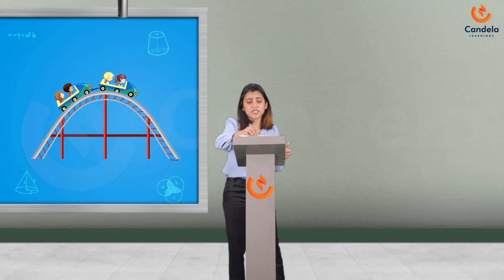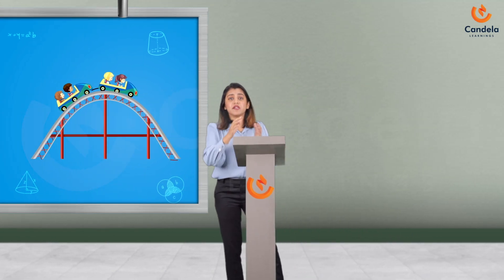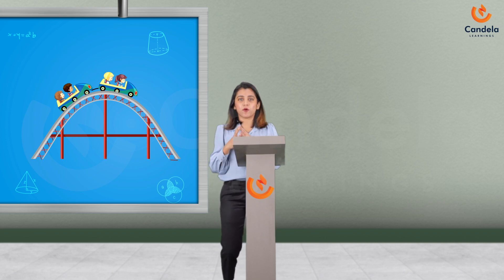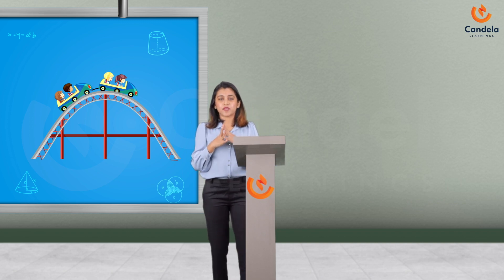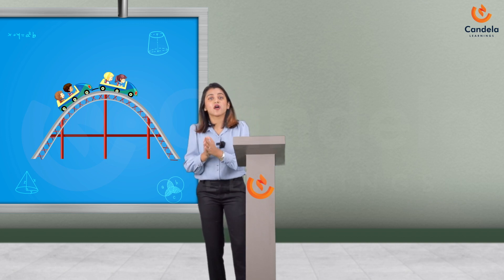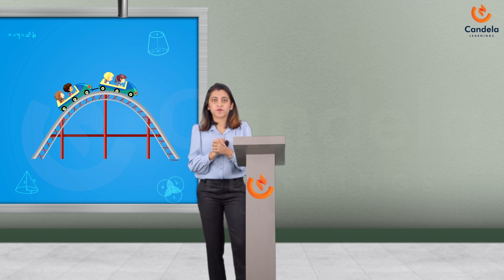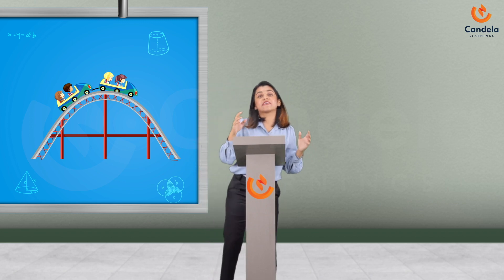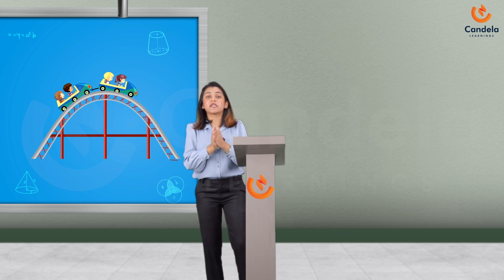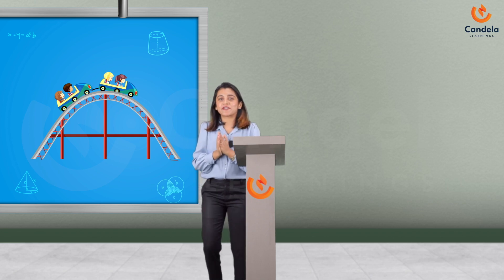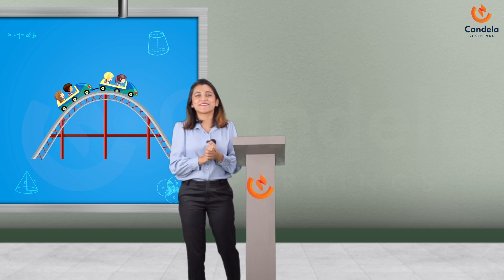In this session, we have learned the geometrical meaning of zeros of a cubic polynomial, and that there are at most three zeros for a cubic polynomial. In the next session, we will be doing a few questions based on this. Now it's time for you to relax. Thank you.